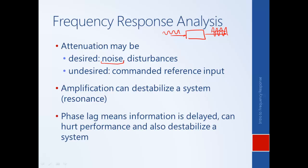Information about phase lag is also important, because a large amount of phase lag means that information into the system is being delayed — you're trying to perform control on the basis of old information. It turns out this can hurt performance and can also cause the system to go unstable. These ideas may have some intuition, but we'll try to show more rigorously why this is true later on.